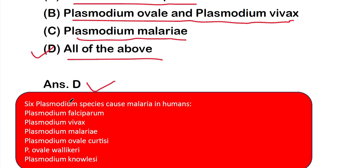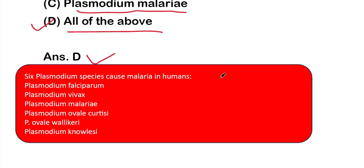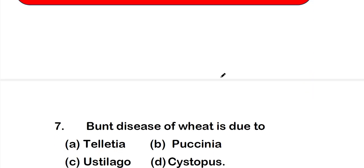Six Plasmodium species can cause malaria in humans: Plasmodium falciparum, Plasmodium vivax, Plasmodium malariae, Plasmodium ovale curtisi, Plasmodium ovale wallikeri, and Plasmodium knowlesi.